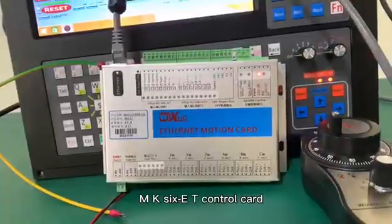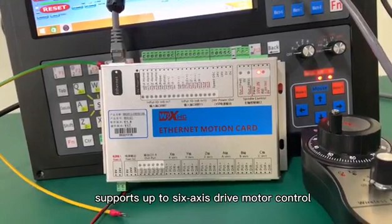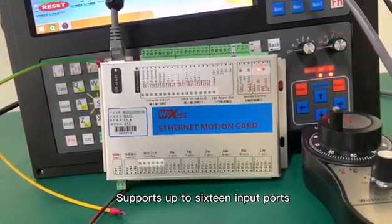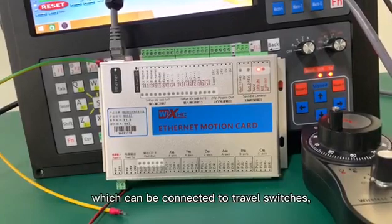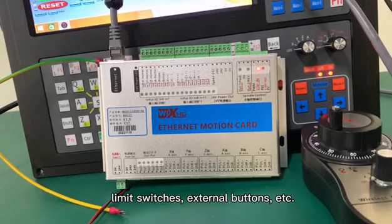MK-6-ET control card supports up to 6-axis drive motor control with differential signal output. It supports up to 16 input ports, which can be connected to travel switches, limit switches, external buttons, etc.